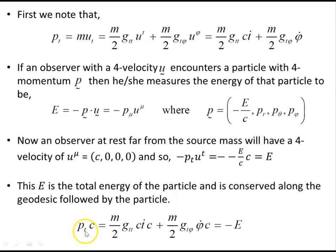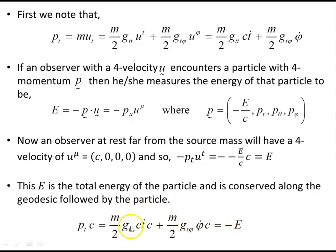The metric terms g_tt and g_tφ are negative, so the left-hand side of our equation is negative. Setting it equal to −E ensures energy is a positive quantity. If we had set it equal to +E, that would suggest energy is negative, which is unphysical. This sign consistency is why the constant on the previous slide was written as −E.